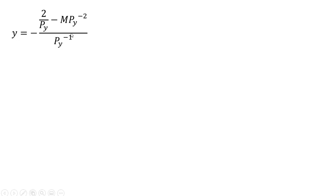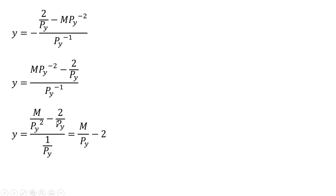Rewriting that last result, we distribute the minus sign in the numerator and simplify further. Then, multiplying both numerator and denominator by the price of good y, things cancel, and as we saw earlier, that is our demand for good y.